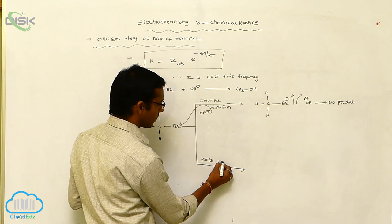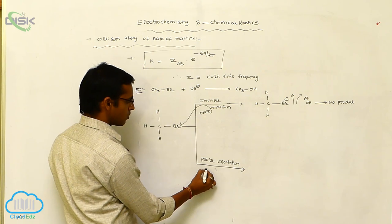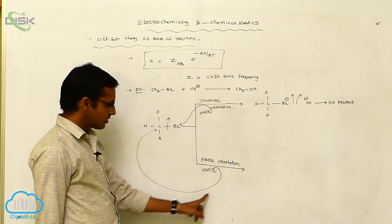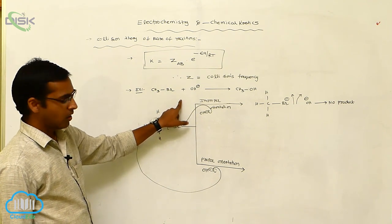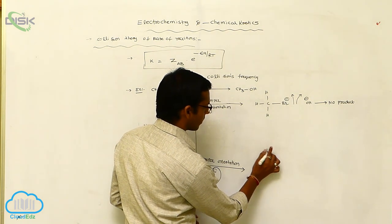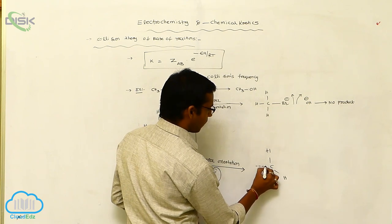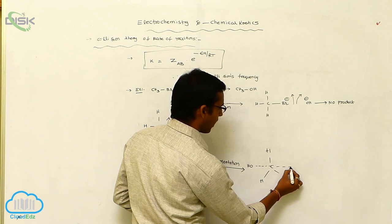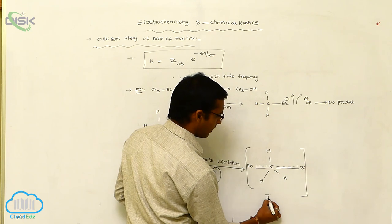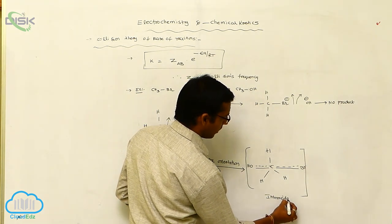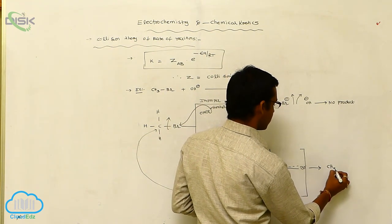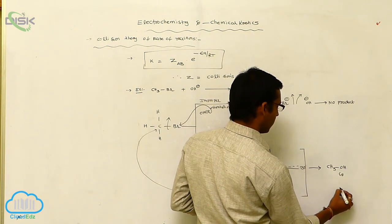In proper orientation, the OH⁻ ion attacks from the back side opposite to the bromine ion. As it attacks the back side, bromine is eliminated from the front side. Repulsions and steric interactions are less, giving a stable intermediate — the transition state — where one bond (C–Br) undergoes breakage and a new bond (C–OH) is formed.